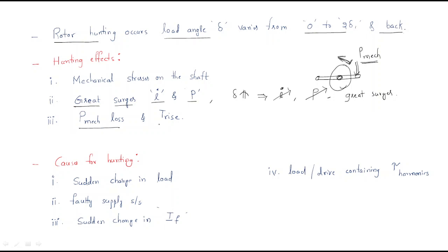Third effect: mechanical loss and temperature rise. When the shaft experiences fluctuations, mechanical stress and mechanical losses occur. Whenever losses occur, temperature rises — the temperature of the motor increases.